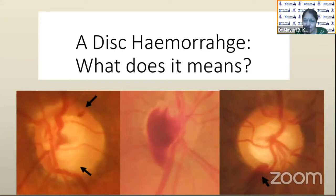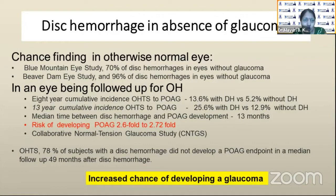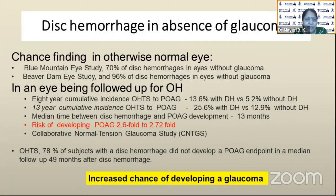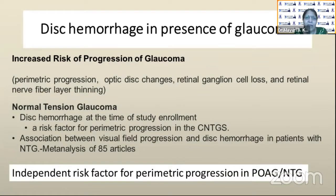What does it mean when there is a disc hemorrhage in a patient? If the patient has no glaucoma and it is a chance finding, the chances of conversion to glaucoma is around 30%. If the eye has ocular hypertension, after 13 years cumulative incidence, disc hemorrhage was seen in 25.6% of patients converting to POAG. In patients with established glaucoma, disc hemorrhage carries increased risk of progression in the form of perimetric progression, disc changes, RGC loss, or RNFL thinning.